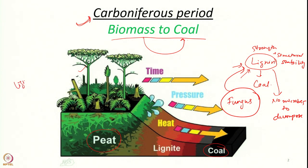In lignin, if you apply heat it can undergo pyrolysis, but lignin is much more stable compared to cellulose and hemicellulose which also make up the bulk of a plant. This peat, under further heat and high pressure deeper underground, converted first to lignite and finally to coal.